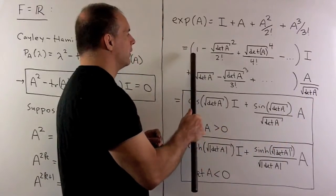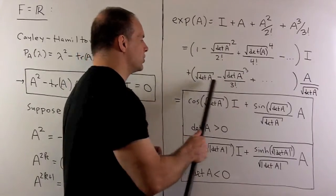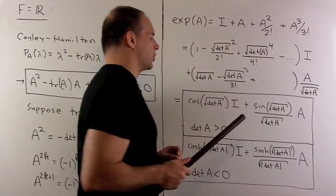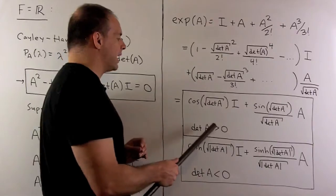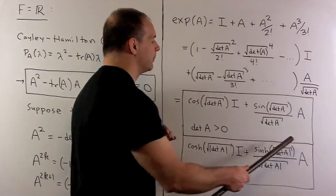Now, you'll notice this is just going to be cosine of the square root of determinant of A. This is just going to be sine of the square root of determinant of A when the determinant of A is positive. So this is going to give us a nice compact formula for our exponential.